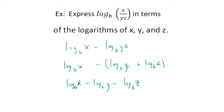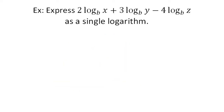Notice that x was in the numerator of the original argument and its sign is positive, while y and z were in the denominator and both have negative signs. This is a shortcut: anything originally in the numerator comes out positive, and anything in the denominator comes out negative.